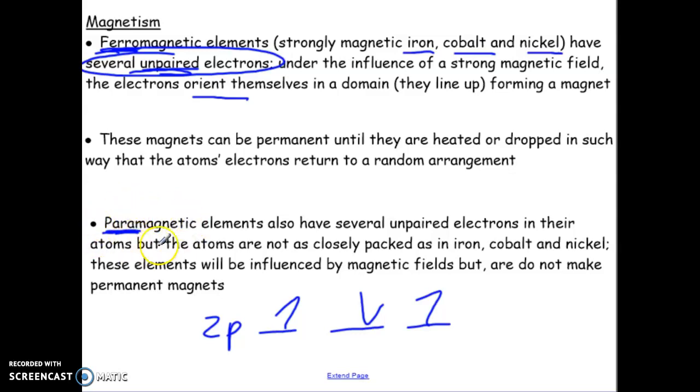Okay, so, paramagnetic elements are elements that have unpaired electrons as well, but they're not as dense as iron, cobalt, and nickel. So, meaning, you may have a lot of unpaired electrons, but there's not as many atoms in the same amount of space.